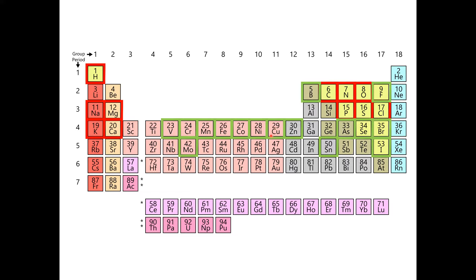Copper and zinc are found together in an enzyme called superoxide dismutase, which is critical for removing oxygen free radicals from the body — preventing damage to cells arising from our metabolism, keeping us healthy. There's another dismutase which uses manganese and iron. Iron, of course, is found in blood and gives it the red color — the hemoglobin. But the octopus, for example, uses copper to carry the oxygen in its blood.